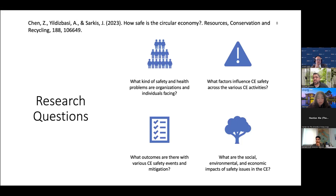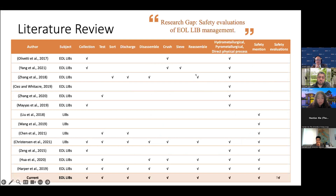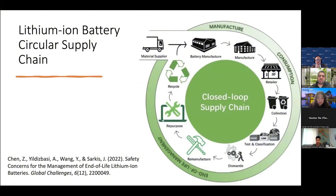We found that a safety evaluation of end-of-life lithium-ion battery management is a gap in the literature. We focused on the lithium-ion battery circular supply chain — while a traditional supply chain starts from raw material suppliers and ends with customers, to minimize carbon emissions we have to close the loop by collecting used batteries and repurposing, recycling, remanufacturing, or redesigning them. We discussed these activities and defined potential safety hazards.